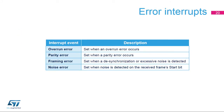Several error flags can also be generated by the LPUART as shown in the table. The overrun, parity, and framing error flags are each set when the corresponding error occurs. The noise error flag is set when noise is detected on the received frame's start bit.